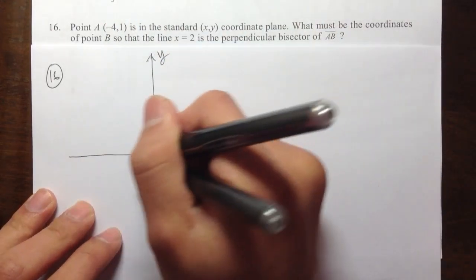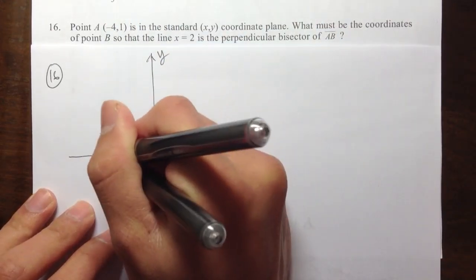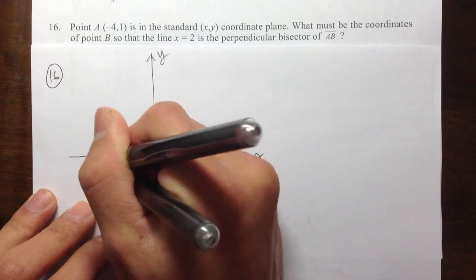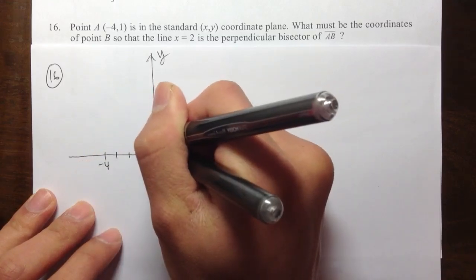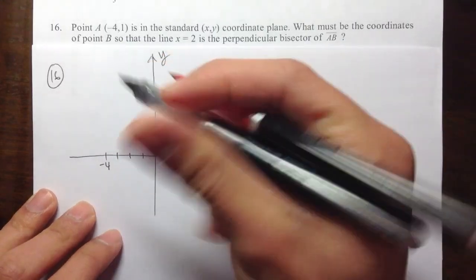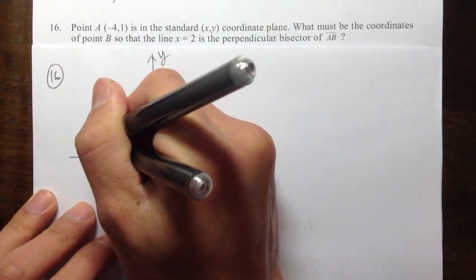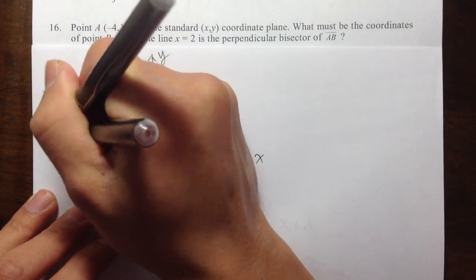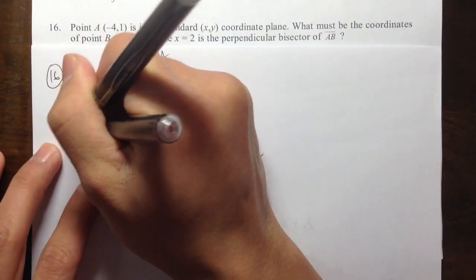So I will go to the left: 1, 2, 3, 4. So that's negative 4. And then I'm going to say 1 is right here. So negative 4 comma 1, this point right here, that's my A. Point A, negative 4 comma 1.